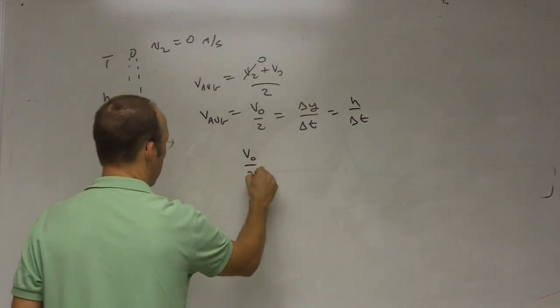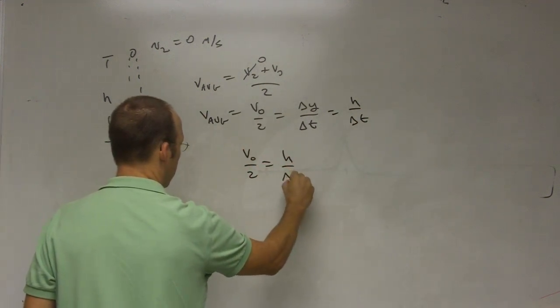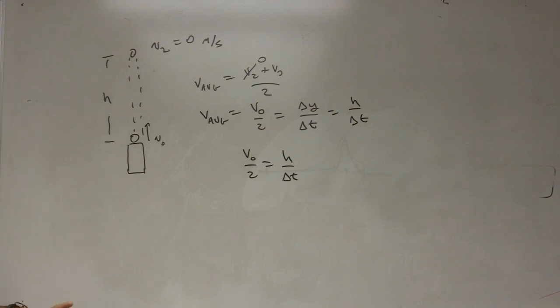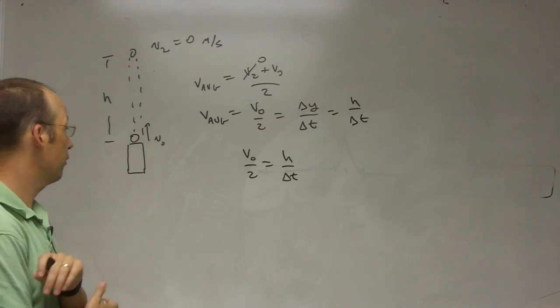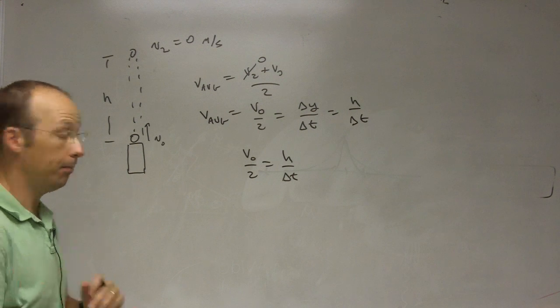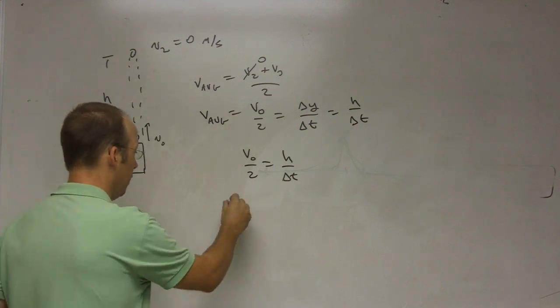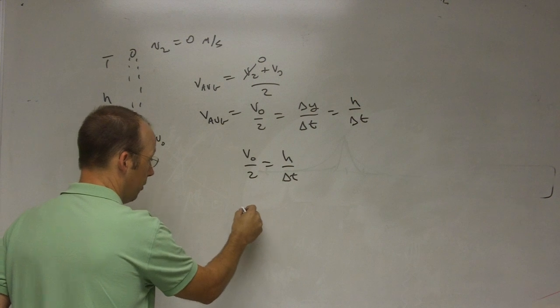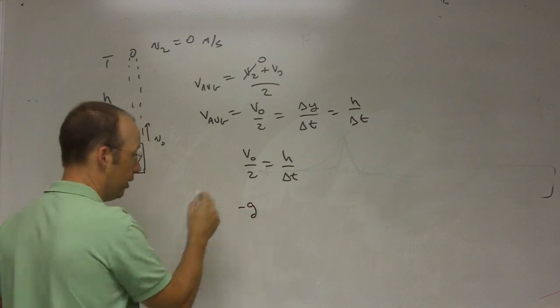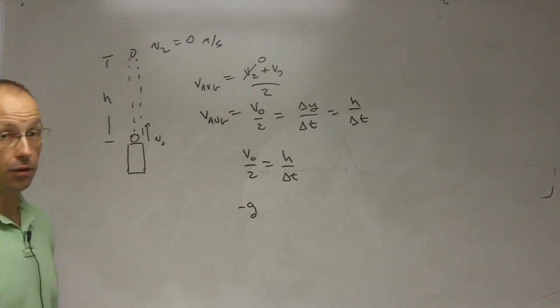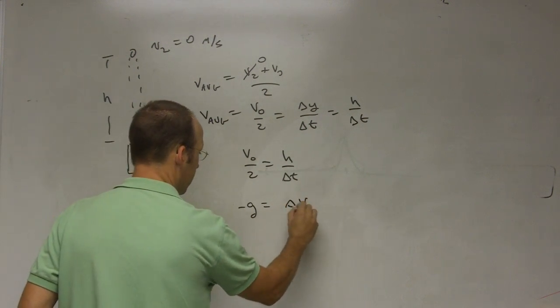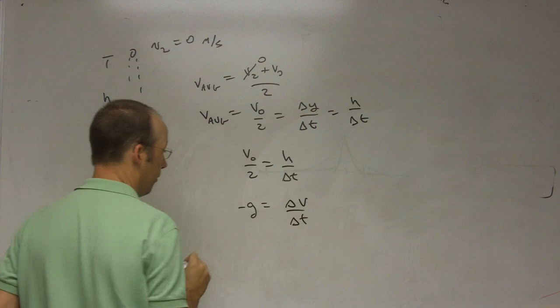So I have v0 over 2 equals h over delta t. I don't know the time, and I don't want to know the time. That's the whole point. So how can I get the time? Well, I can also say the acceleration, which is going to be negative g, where g equals 9.8 meters per second squared for a free falling object, is going to be the change in velocity over the change in time.